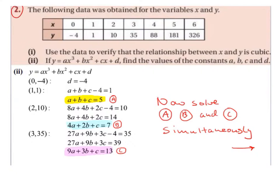Now substituting the point (1, 1) into the equation. With d already known to be −4, we get a×1³ + b×1² + c×1 − 4 = 1, which simplifies to a + b + c − 4 = 1. Bringing the −4 to the other side gives a + b + c = 5. So we have one equation in terms of a, b, and c.